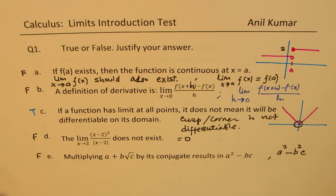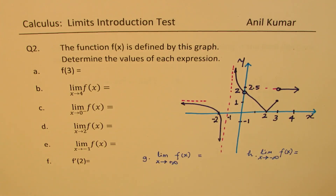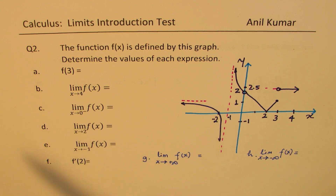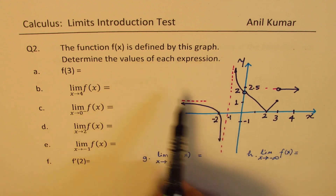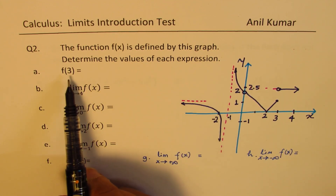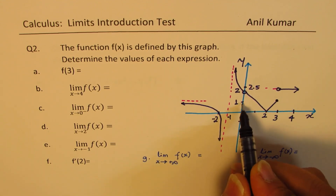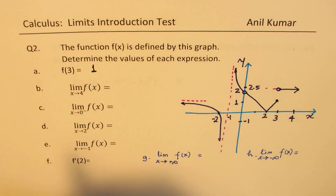Let's see question number 2. I have slightly modified this question from the normal trend. Question number 2: the function f of x is defined by a graph — determine the value of each expression. A: f of 3, the value of the function at 3. This point is filled in, which seems to be 1. So I am writing this as 1.